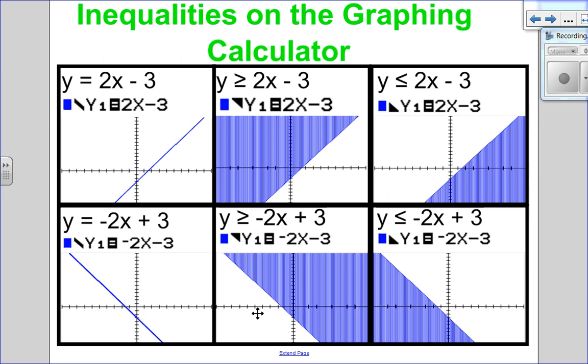Now all of these wonderful graphs can be done on the graphing calculator. Notice here, these are all the different possibilities. I have a boundary line where I'm shading above, so it's greater than, a boundary line where I'm shading below, so it's less than. I can also have a negative sloping line. Greater than along that line, I'm always shading above. Or less than along this boundary line, I'm always shading below.